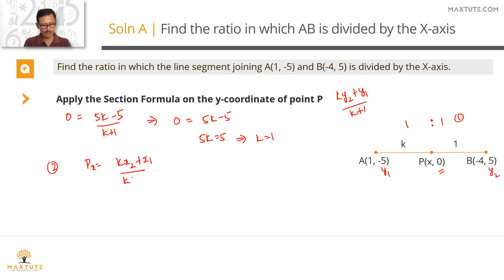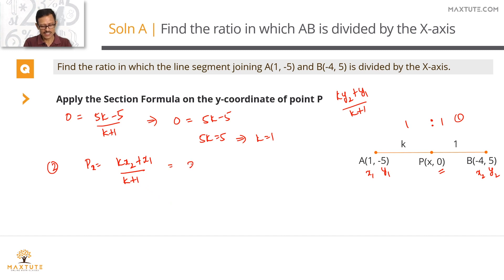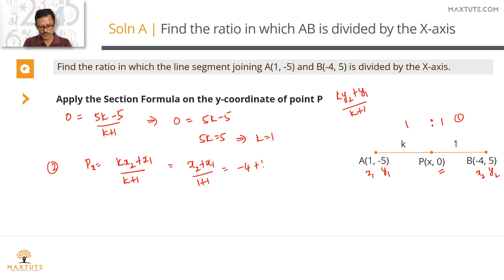The x-coordinate formula is (k·x₂ + x₁) / (k + 1). We mark x₁ = 1 and x₂ = -4. With k = 1, this translates to (x₂ + x₁) / (1 + 1) = (-4 + 1) / 2 = -3 / 2. So the x-coordinate of point P is -3/2.